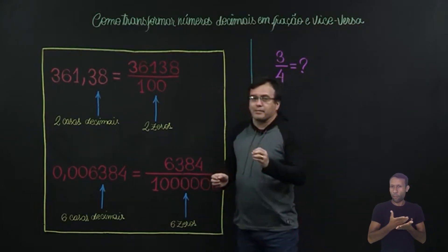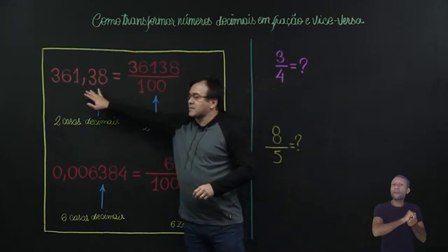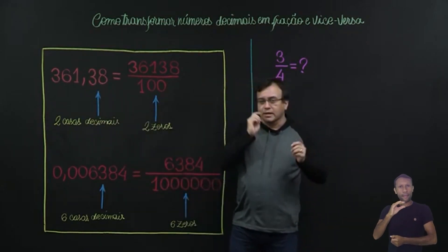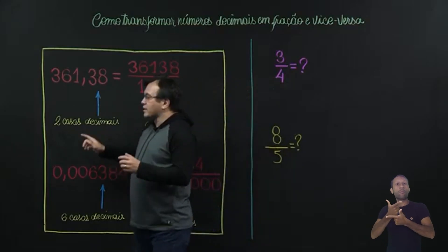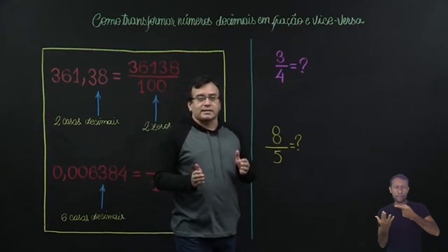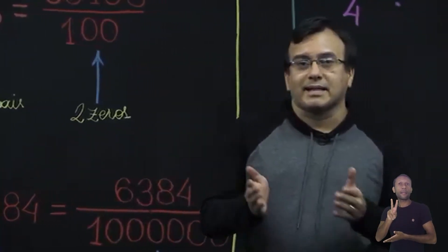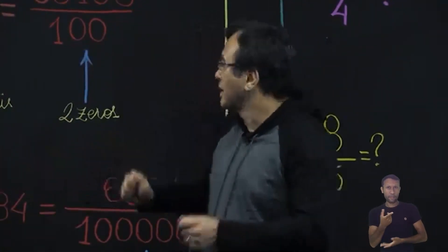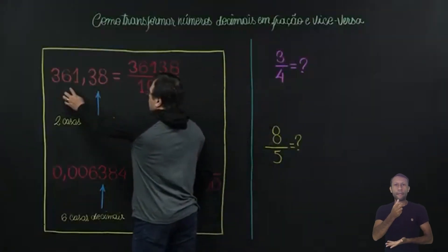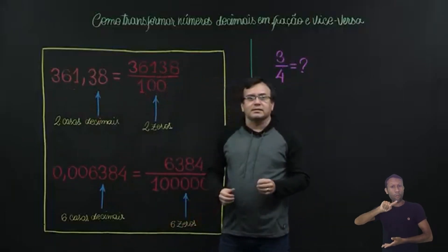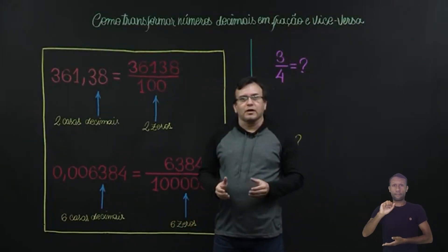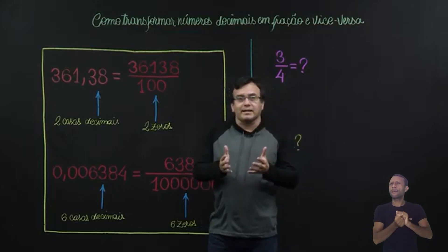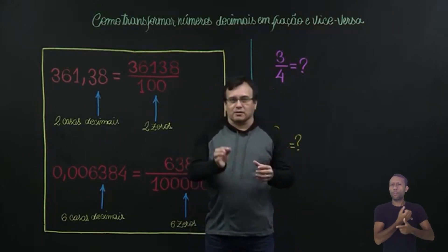Vamos começar então com a nossa primeira parte, que é a transformação de um número decimal em uma fração. O número decimal não se esqueçam que ele é reconhecido sempre pela inserção da vírgula em sua composição. Então eu tenho aqui, por exemplo, 361,38. Como é que eu faço para transformar esse número em fração?